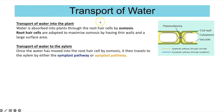Water enters the plant at the root hair cells by osmosis. Root hair cells are adapted to maximise osmosis by having thin walls, which create a short diffusion distance, and a long protruding part that creates a large surface area to maximise water absorption by osmosis.